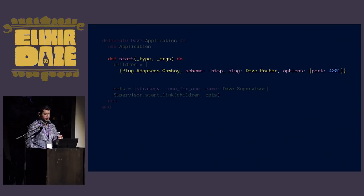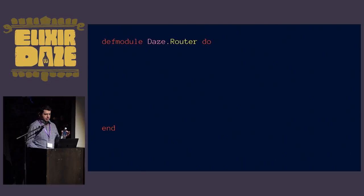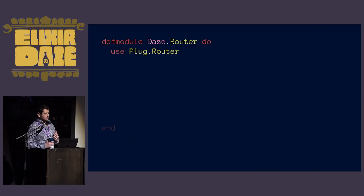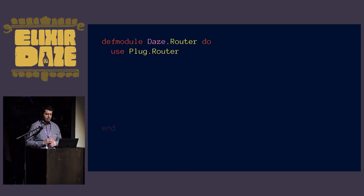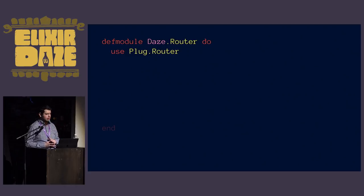Let's go ahead and define that module. We define a module and the first thing we do is use Plug.Router, which gives us a lot of things. First, it defines a plug so it satisfies the specification and we can pass it to the Cowboy adapter. Second, it gives us pipelines familiar from Phoenix where you can define plugs executed sequentially. Third, it gives us a nice DSL to match our routes - something like Sinatra if you come from the Ruby world.